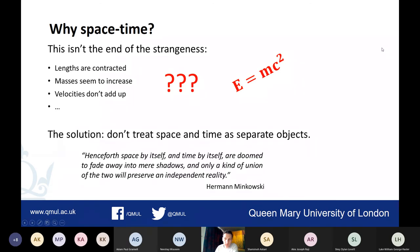The solution to this strangeness - every observer having their own concepts of time and space, and simultaneity not existing - is to not treat space and time as separate objects. This insight came from Hermann Minkowski, who was one of Einstein's teachers. There's a famous quote from Minkowski: 'Henceforth space by itself and time by itself are doomed to fade away into mere shadows, and only a kind of union of the two will preserve an independent reality.' Minkowski showed that if we put them together in a cunning way, we create spacetime, which has its own independent reality.